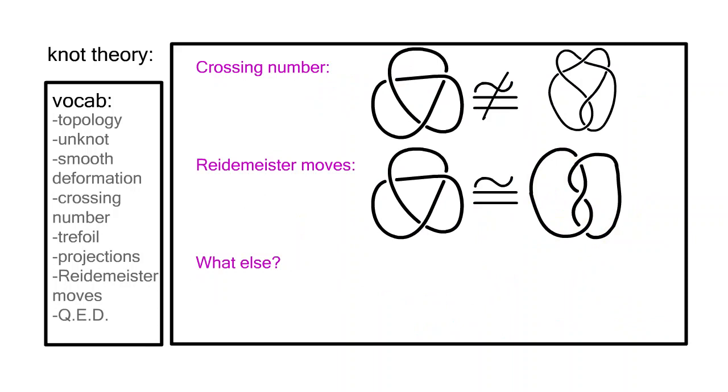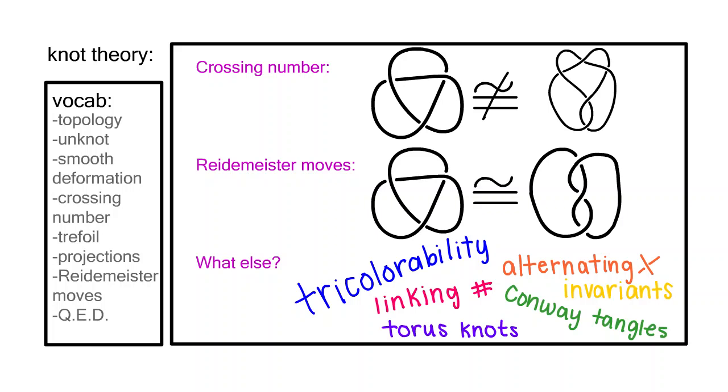While the crossing number and Reidemeister moves can make basic distinctions, more complex knots require alternative methods. Methods that can prove this knot and this knot are not the same, even though they have the same crossing number.